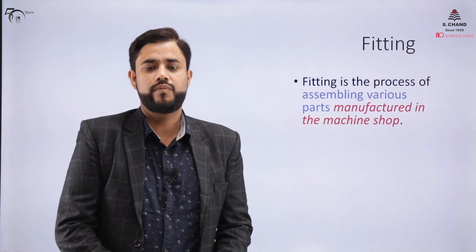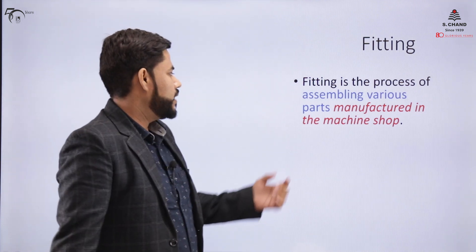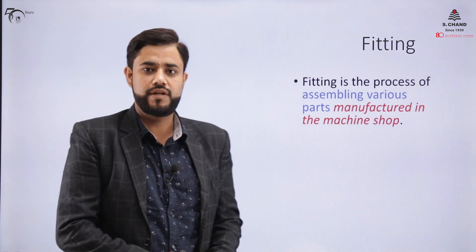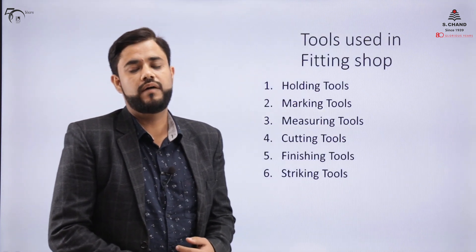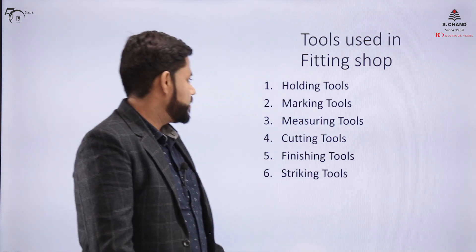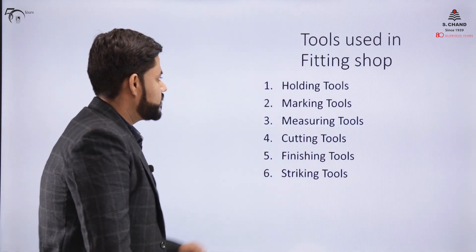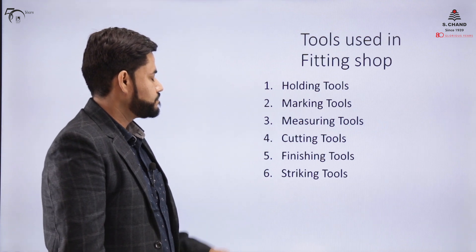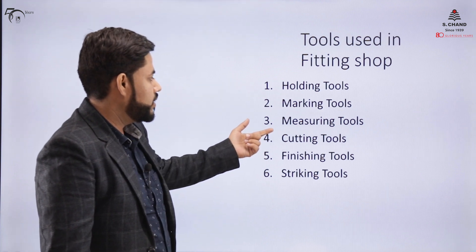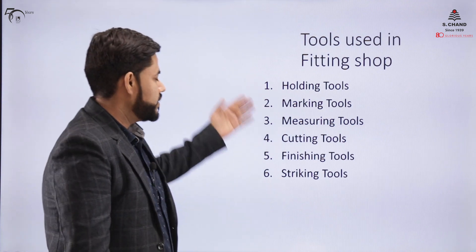So what is the fitting process? Fitting is basically a process in which you assemble the mating parts, and these parts are manufactured in the machine shop. The tools used in the fitting shop are majorly six types: holding tools, marking tools, measuring tools, cutting tools, finishing tools, and striking tools.